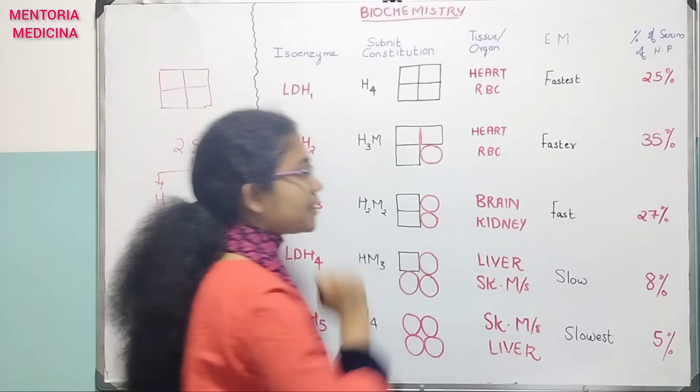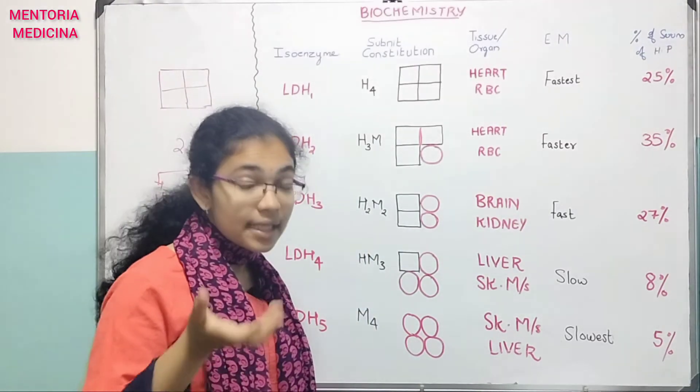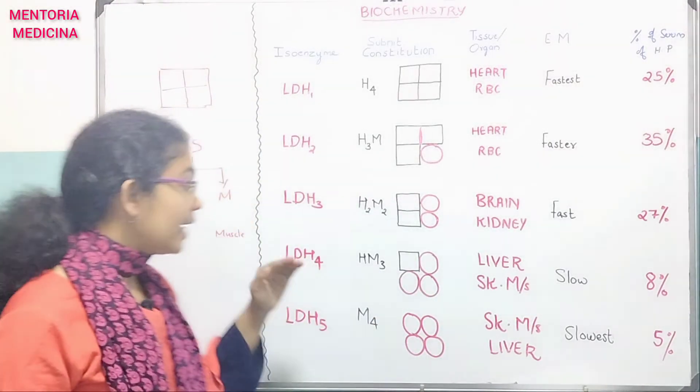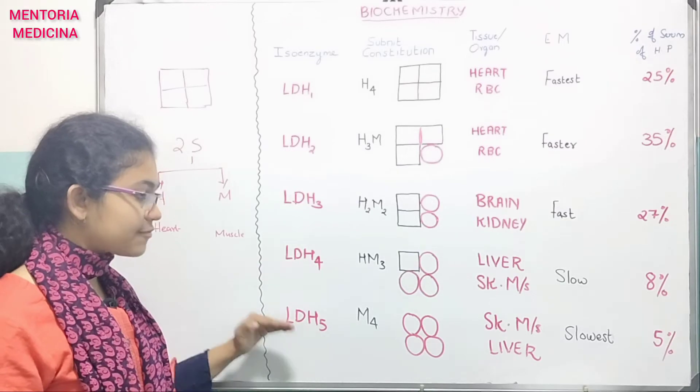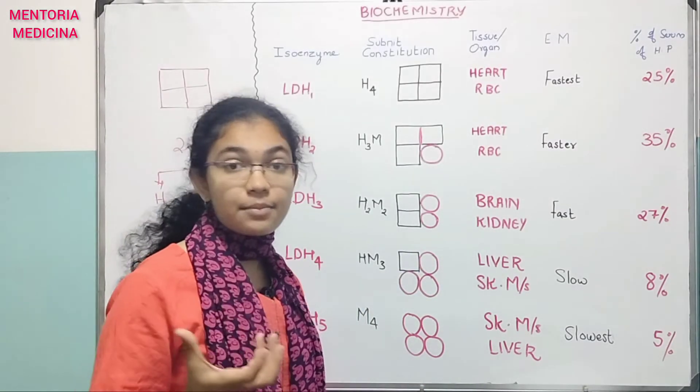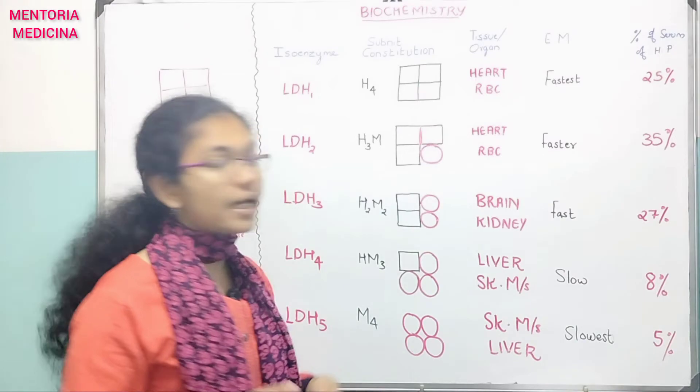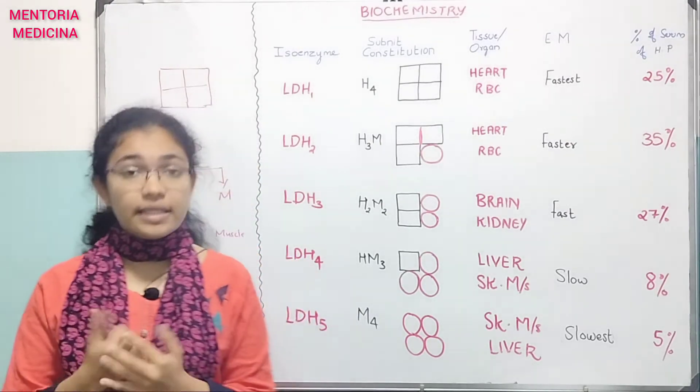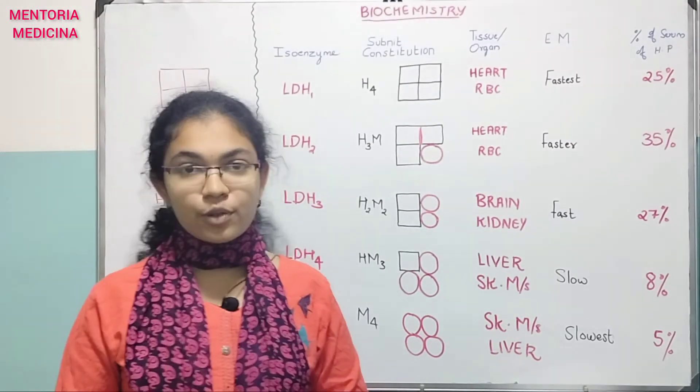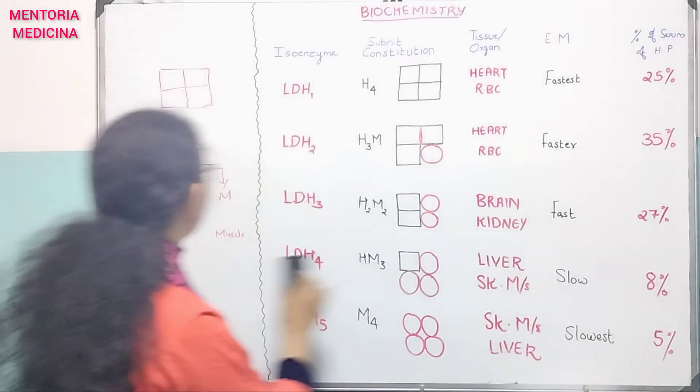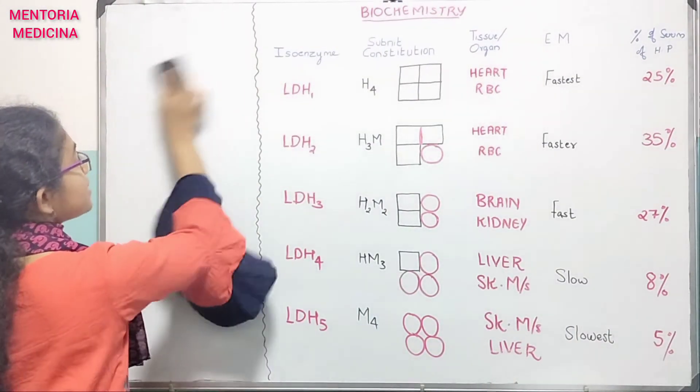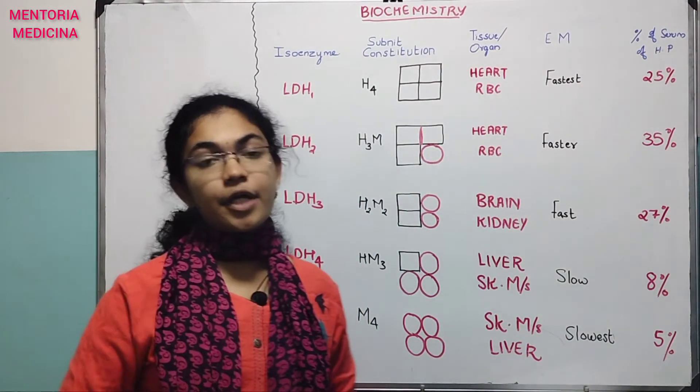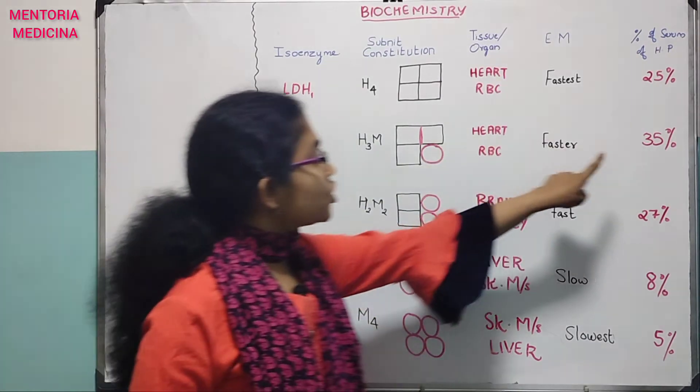LDH5 is M4. More LDH5 in skeletal muscle and liver. LDH5 is 5%. Low percentage, 1%.